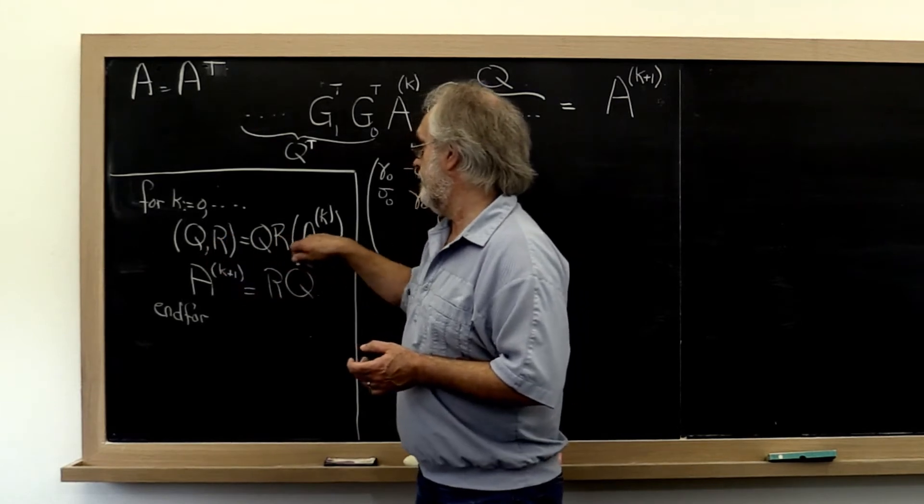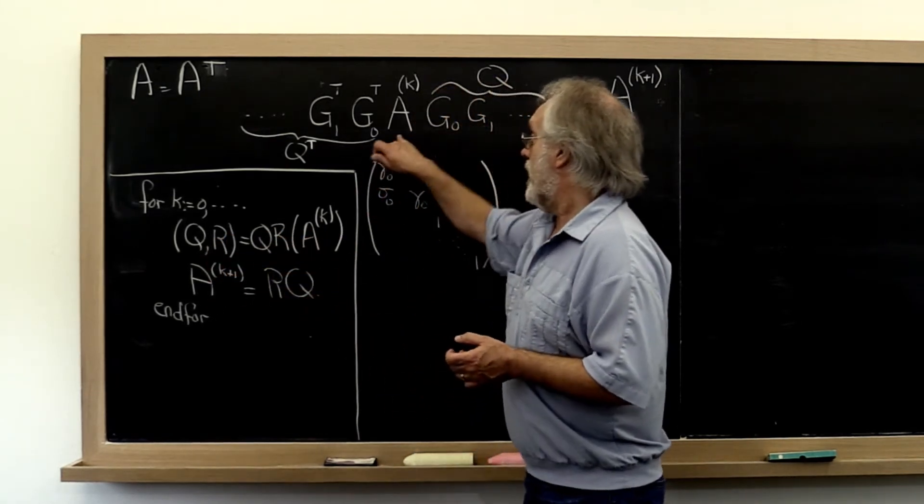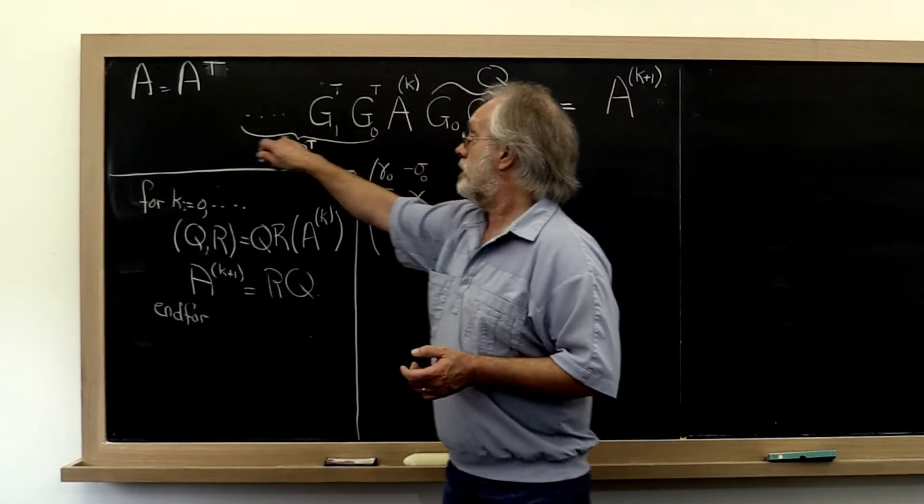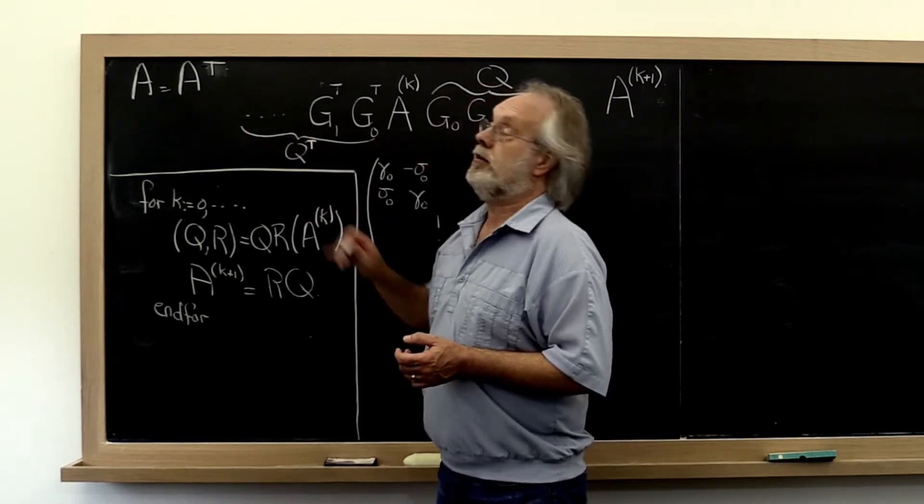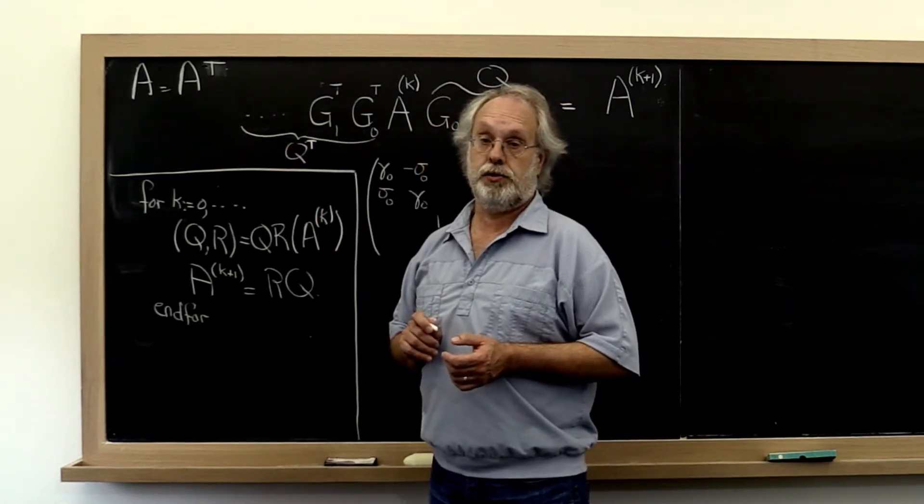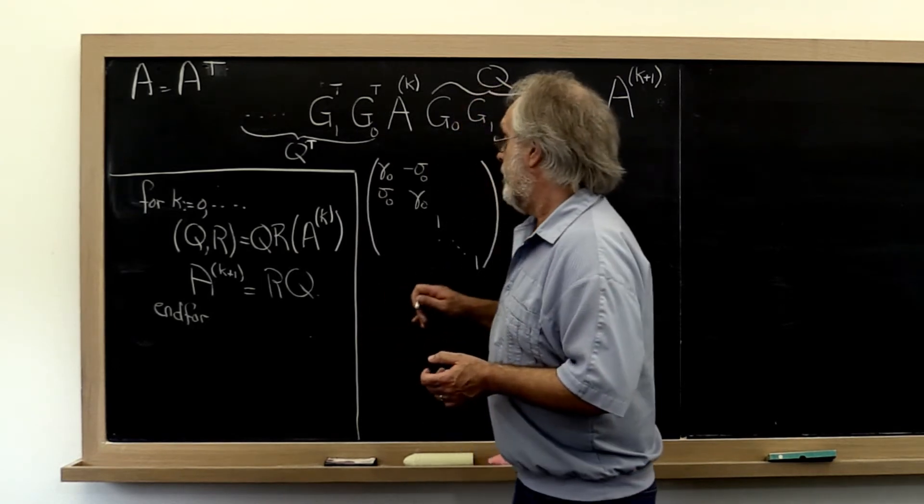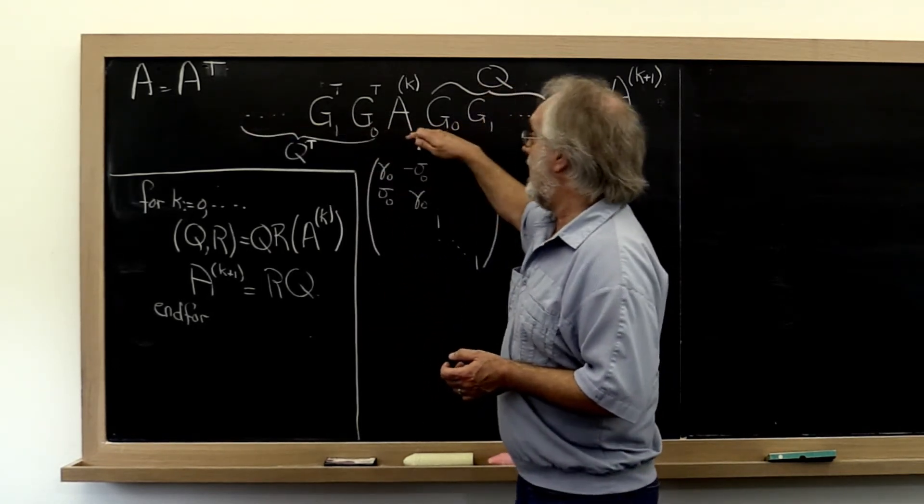Now the detail of this is that we actually compute a sequence of Givens rotations which together then represent our Q transpose. And therefore doing the result of that then is R.